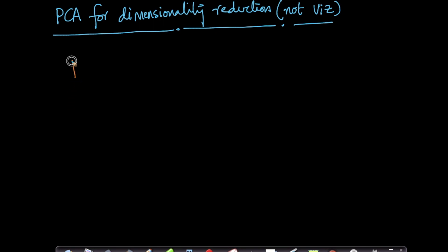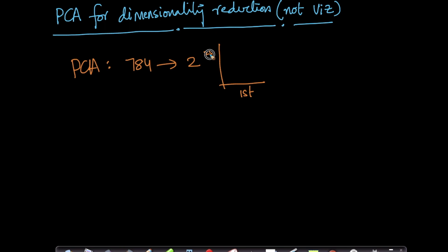While we have used PCA for visualization — where we took a 784-dimensional dataset and converted it into a 2D dataset, visualizing the first and second principal components — there are other applications of PCA where we want to go from 784 dimensions to, say, 10 dimensions. These applications arise when you're training machine learning models.